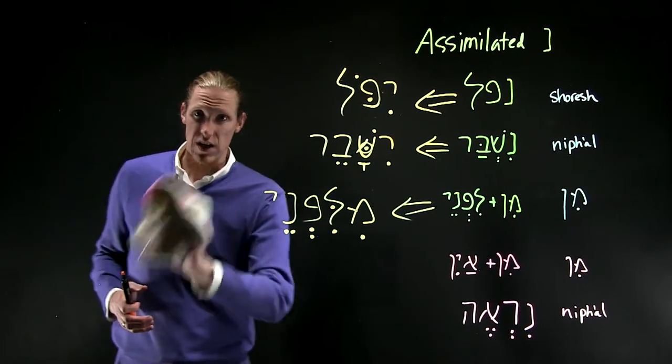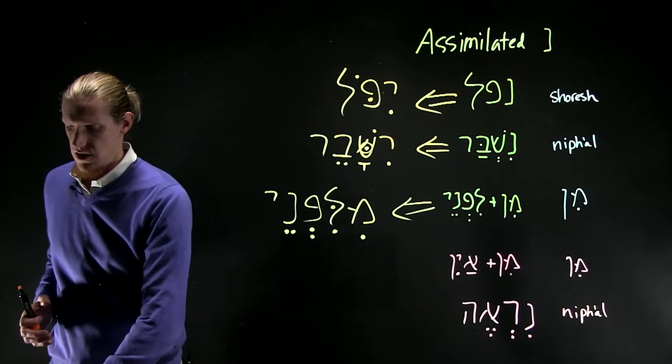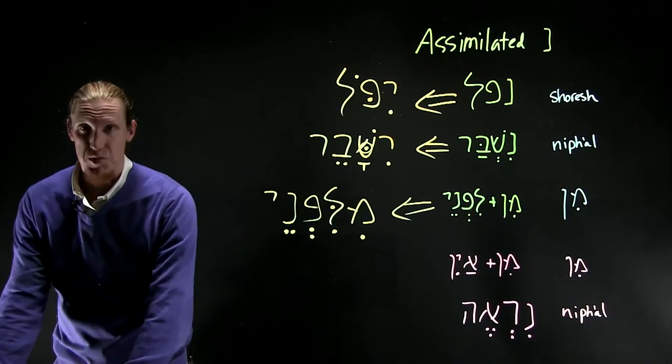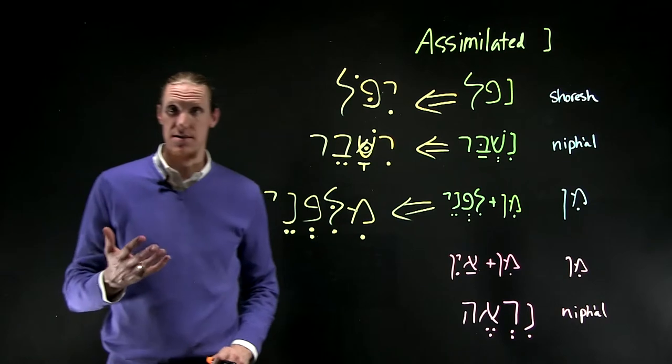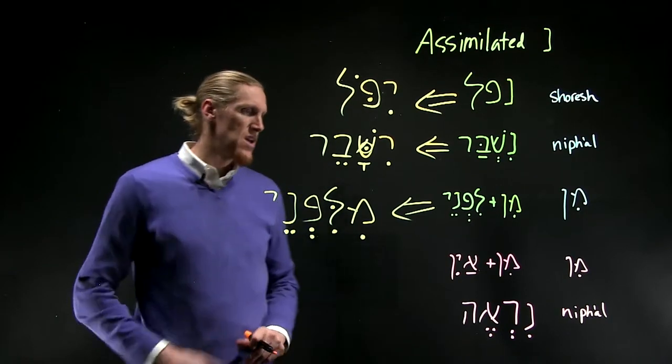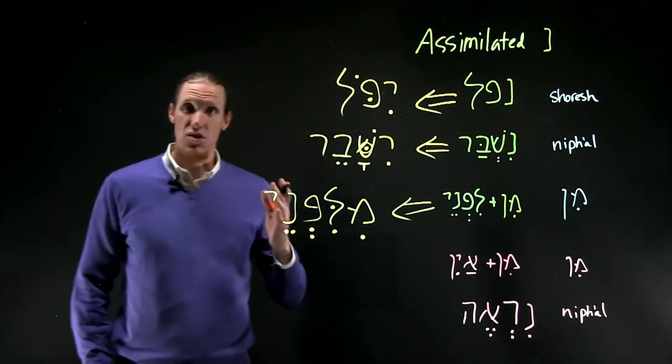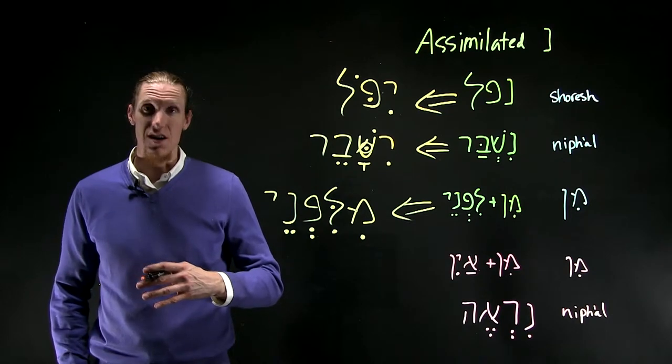There's one other occasion in which the noon will disappear and will leave a trace of its disappearance. And that is when the letter that follows the noon is a guttural.